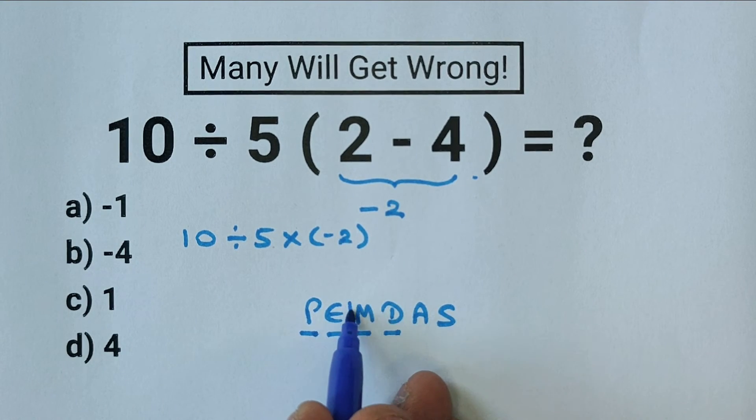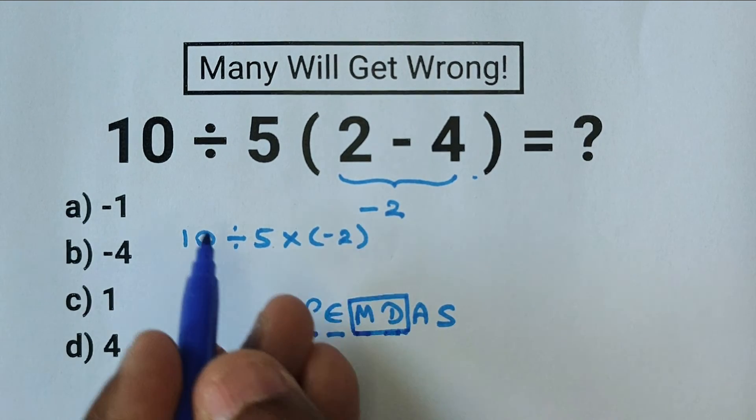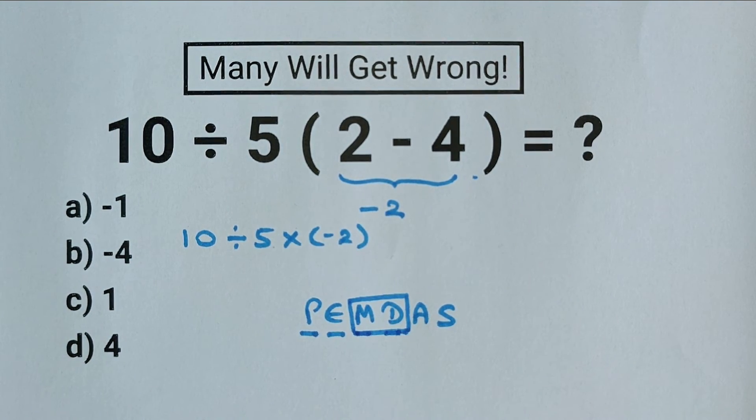Here you should consider multiplication and division as a group, and when you are going from left to right in the mathematical expression, you should do whichever comes first.